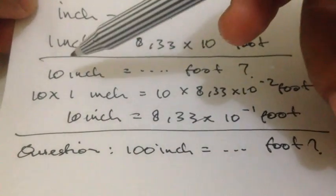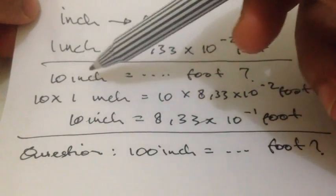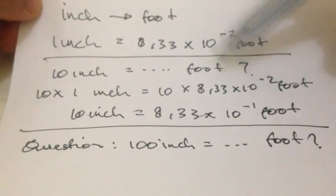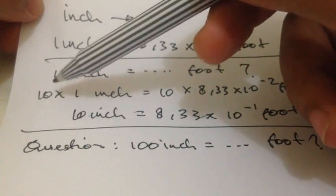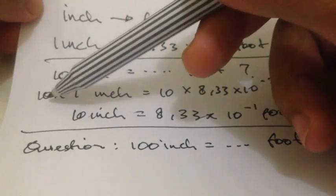Then I want to convert 10 inches into feet. How do we convert that number? To convert this number, we can do it just like this. So you put 10 from here to here, and then...